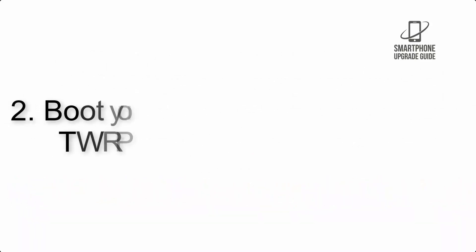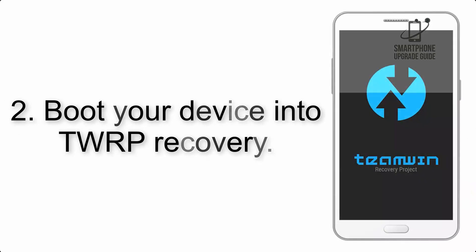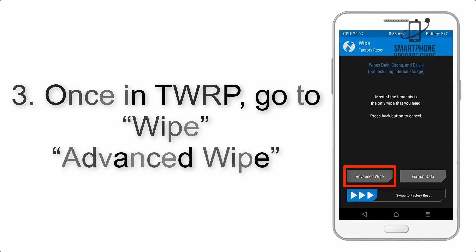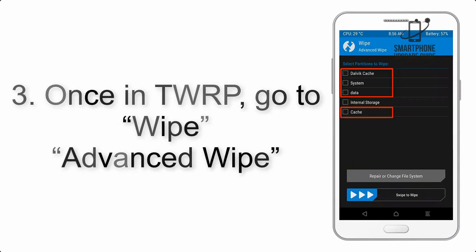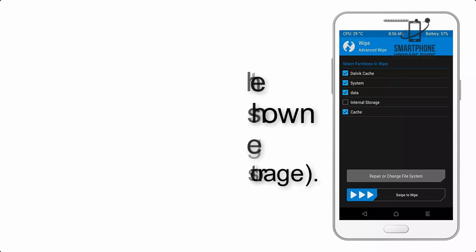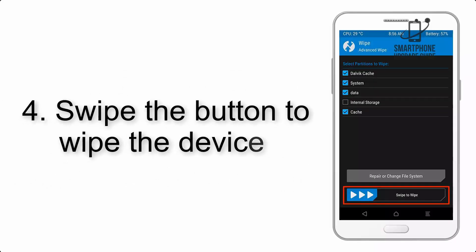Step 2: Boot your device into TWRP recovery. Once in TWRP, click on Wipe, then Advanced Wipe, and select the checkboxes as shown in the image, excluding internal storage.